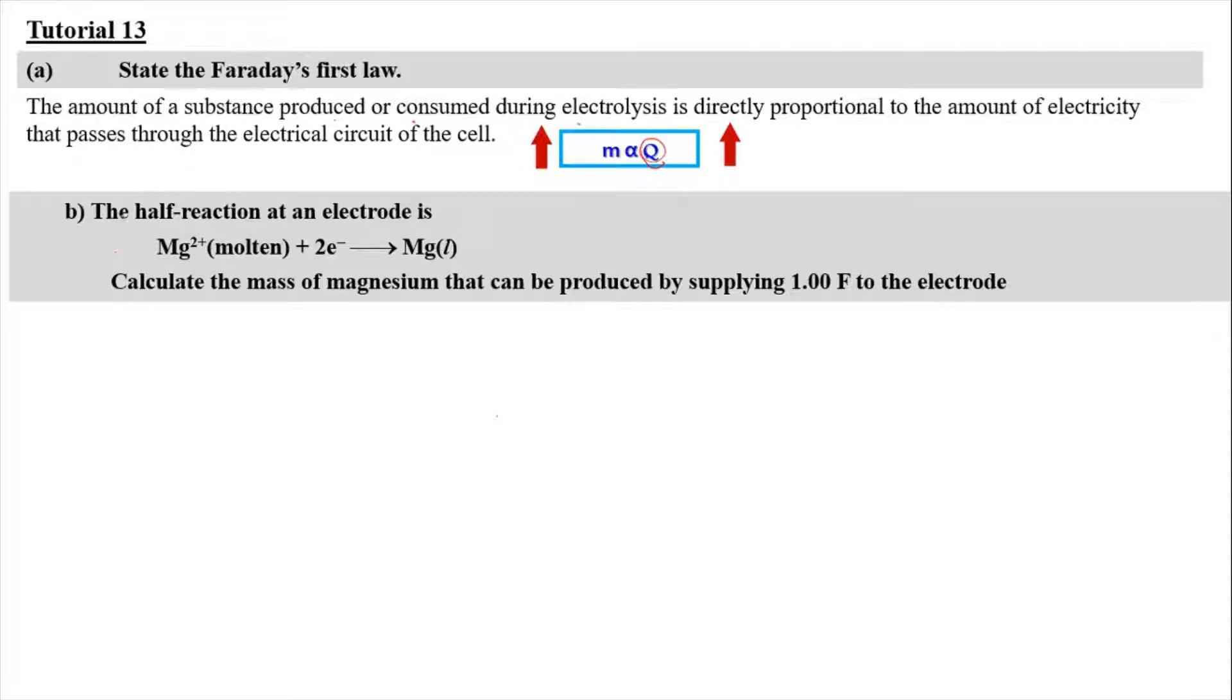Now let's do tutorial question B. The half cell reaction at an electrode is Mg²⁺ molten or in liquid, accepting 2 electrons to form magnesium liquid. Calculate the mass of magnesium that can be produced by supplying 1 Faraday to the electrode. So we know that 2 Faraday, 2 mol of electron equal to 2 Faraday. From the equation, 2 electrons produces 1 mol of magnesium. So we can say that 2 Faraday produces 1 mol of magnesium because it is equivalent. But if we were to only supply 1 Faraday, we will get 0.5 mol of magnesium. So this is based on stoichiometry.